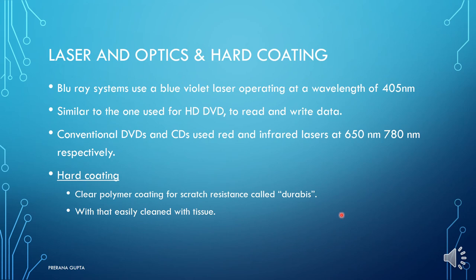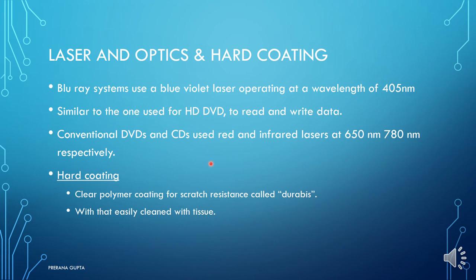Blu-ray systems use a blue-violet laser operating at a wavelength of 405 nanometers to read and write data. Conventional DVDs and CDs use red and infrared lasers at 650 and 780 nanometers respectively. Blu-ray discs also feature a hard coating — a clear polymer coating for scratch resistance called Durabis — which allows the disc to be cleaned easily with a simple tissue.